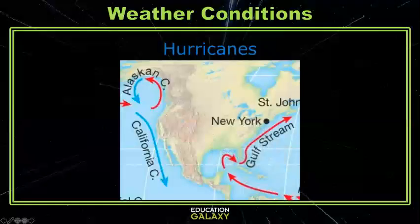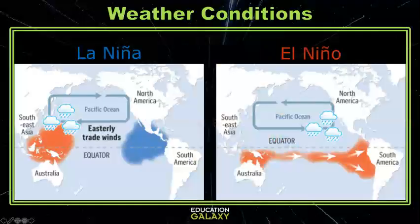Sometimes these air currents and ocean currents make cycles of weather patterns, like El Niño and La Niña. Trade winds cause the surface water to be unusually warm or unusually cold, which affects the air temperature. El Niño is the warm phase of this cycle, and La Niña is the cool phase. This cycle occurs every two to seven years, and each phase can last anywhere between nine months to two years. El Niño and La Niña are Spanish for little boy and little girl.